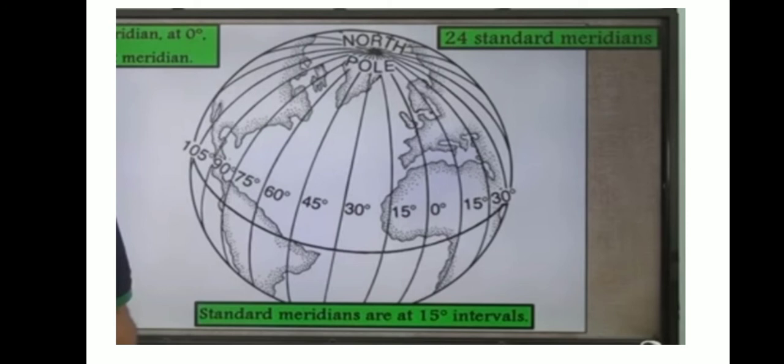Since the Prime Meridian passes through Greenwich, its local time is known as Greenwich Mean Time (GMT). Indian Standard Time is 5.5 hours ahead of Greenwich Mean Time.